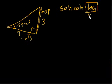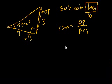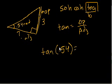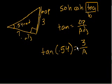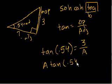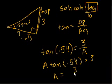T is for tangent — TOA. Tangent equals opposite over adjacent. So let's take the tangent of 0.54 radians: tan(0.54) = 3 (the opposite side) divided by A (the adjacent side, which we don't know). Multiplying both sides by A, we get A × tan(0.54) = 3, so A = 3 divided by tan(0.54).